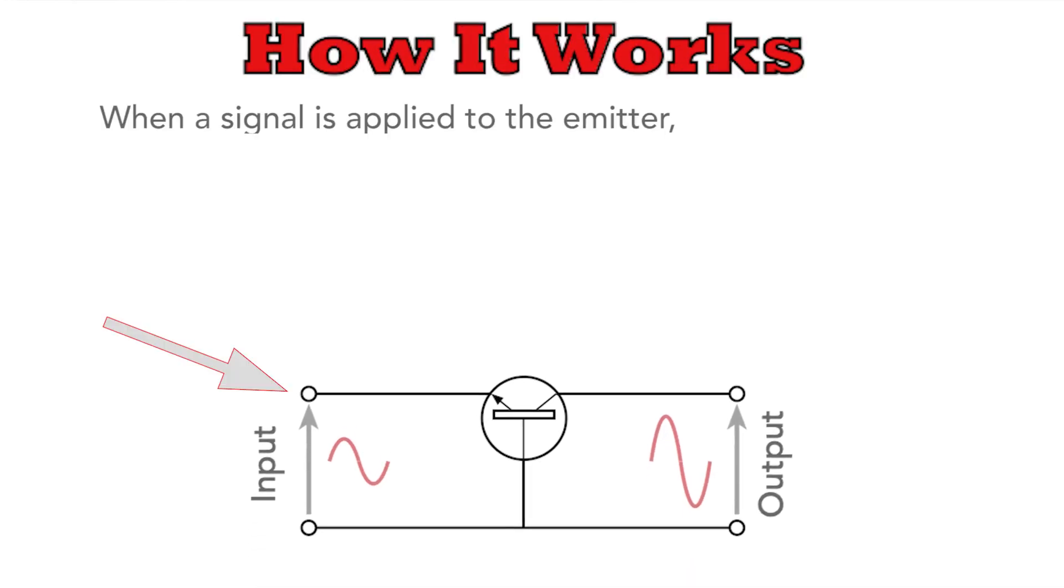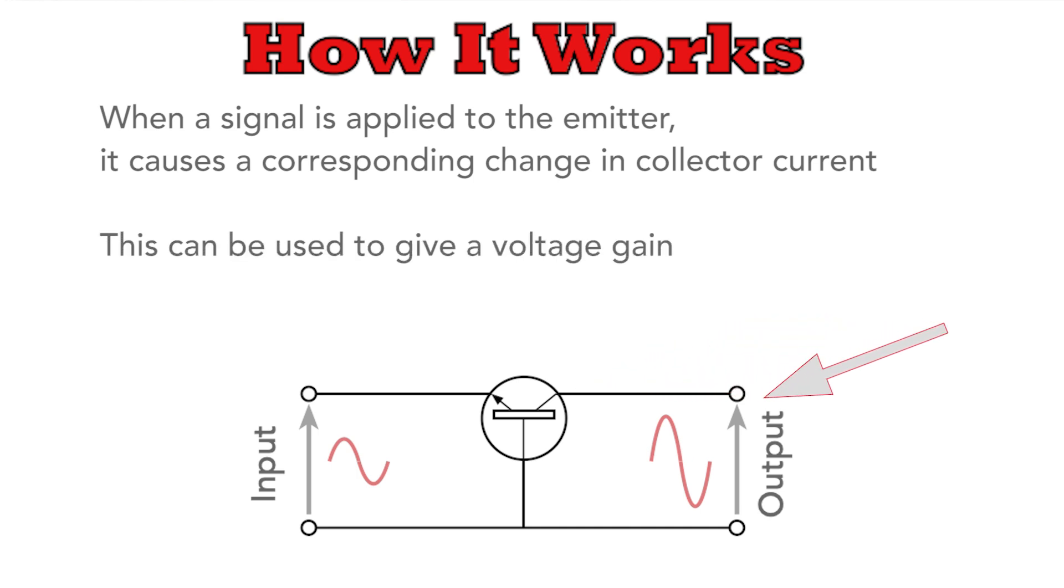So how does the Common Base configuration work? Well, when an input signal is applied to the emitter it causes a corresponding change in the collector current which can be used to give a voltage gain. The way it operates gives some key characteristics.